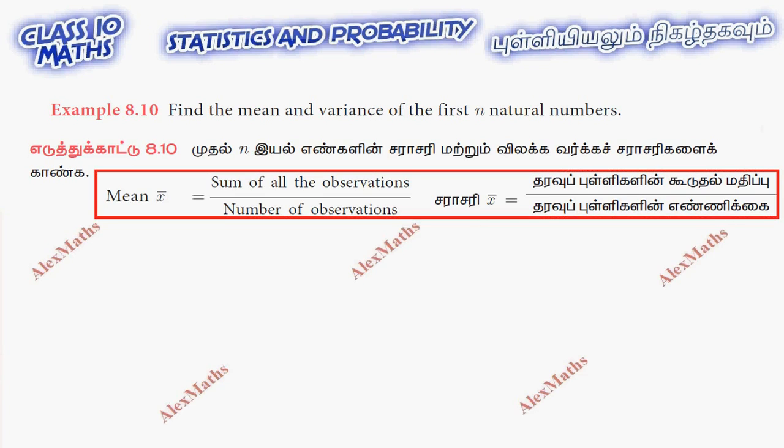First n natural numbers, so the observations are 1, 2, 3, 4 dot dot dot n. Sum of all observations, sigma n, is 1 plus 2 plus 3 plus dot dot dot n.